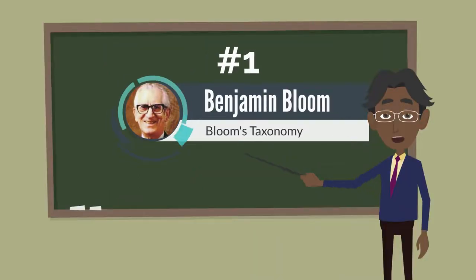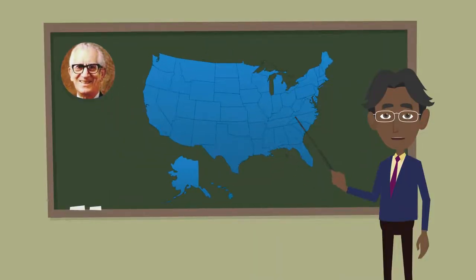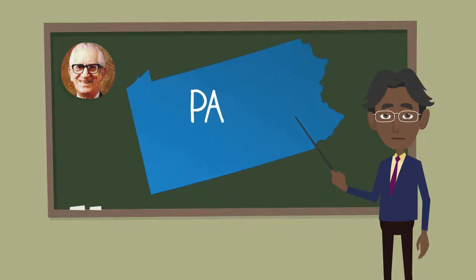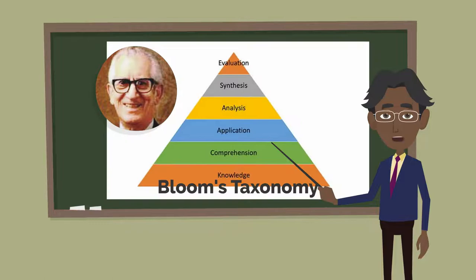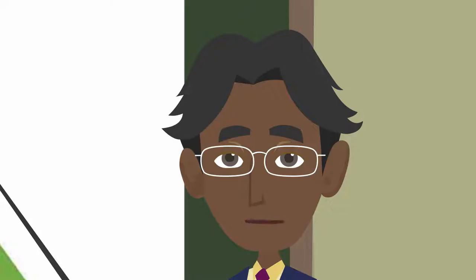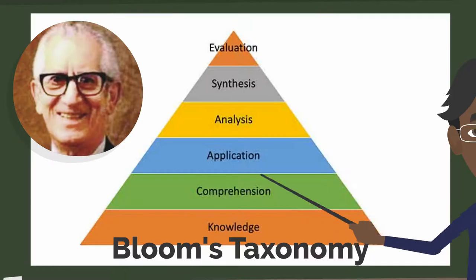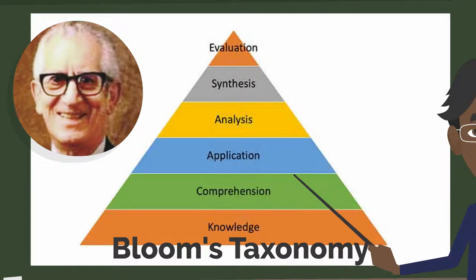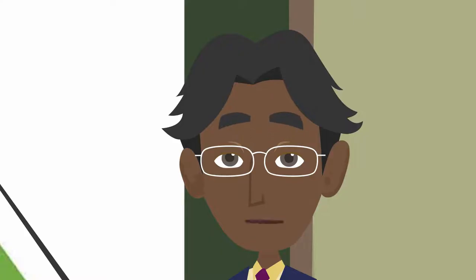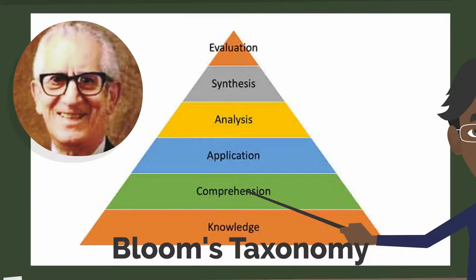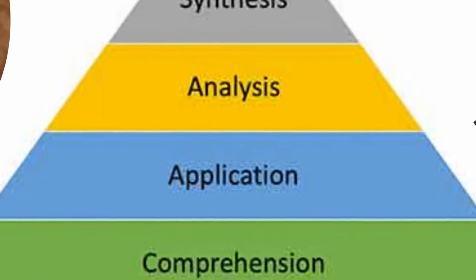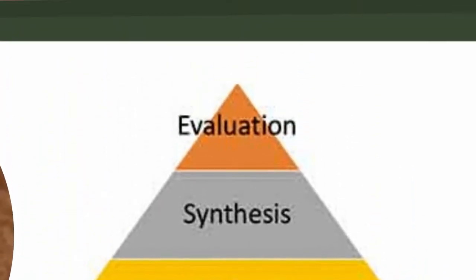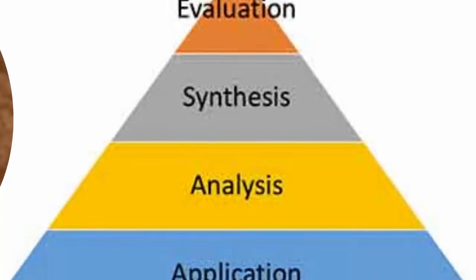Number one: Benjamin Bloom. Benjamin Bloom was born in Lansford, Pennsylvania in 1913. He was the author of the learning theory known as Bloom's Taxonomy — a classification system used to define and distinguish different levels of human cognition, thinking, learning, and understanding. It is broken up into six different levels of learning. These levels are hierarchical, so learning at the higher levels is dependent on having attained prerequisite skills at lower levels.